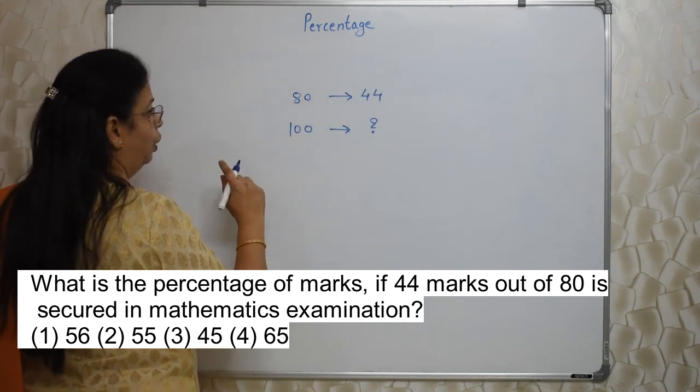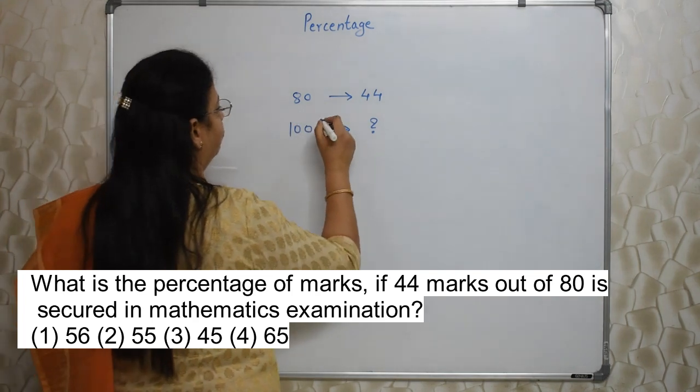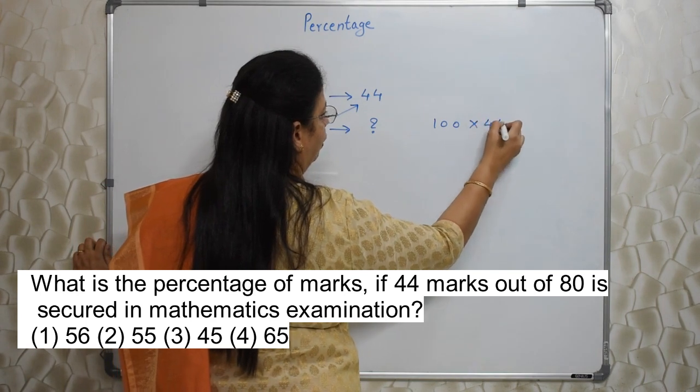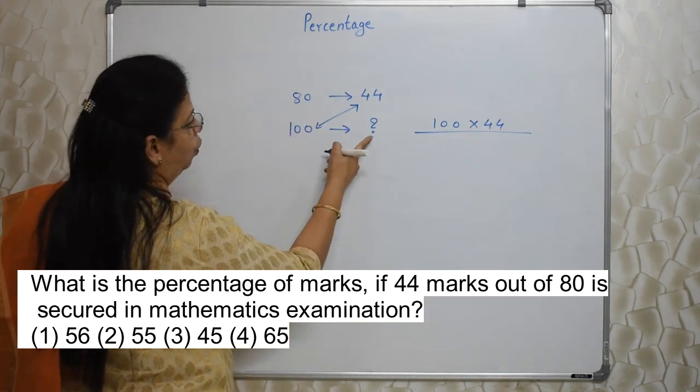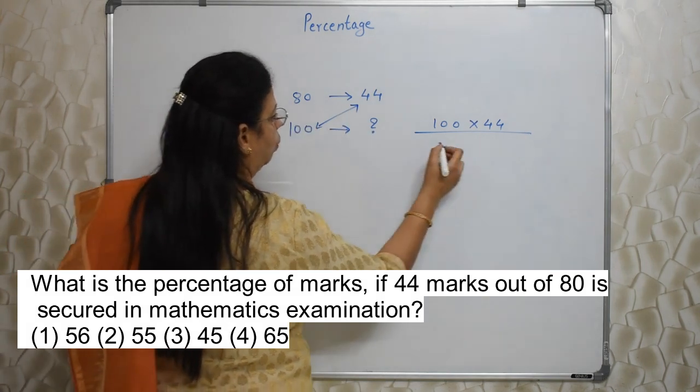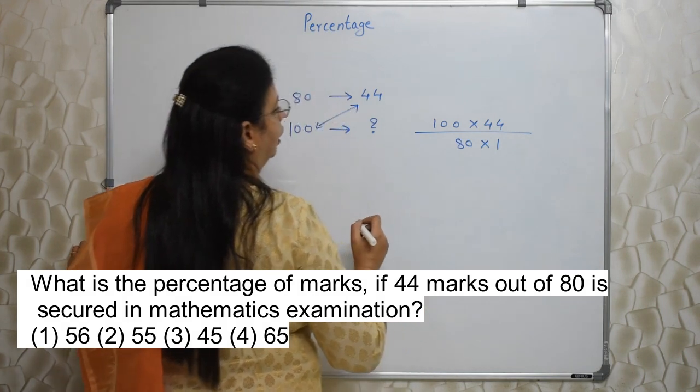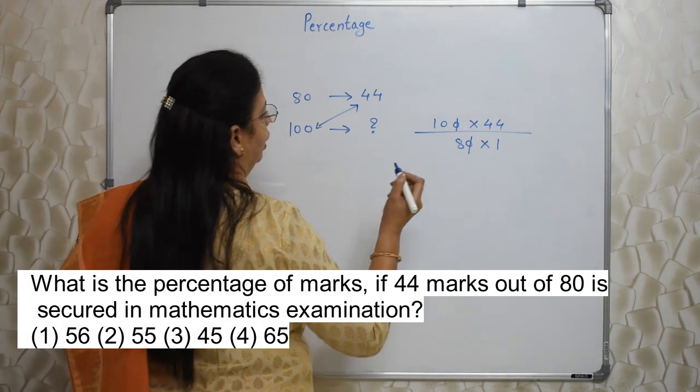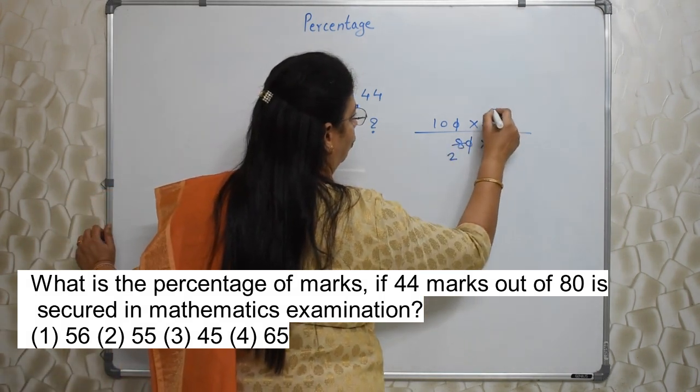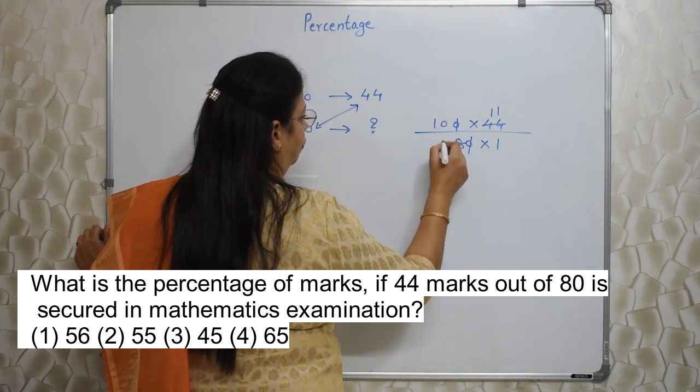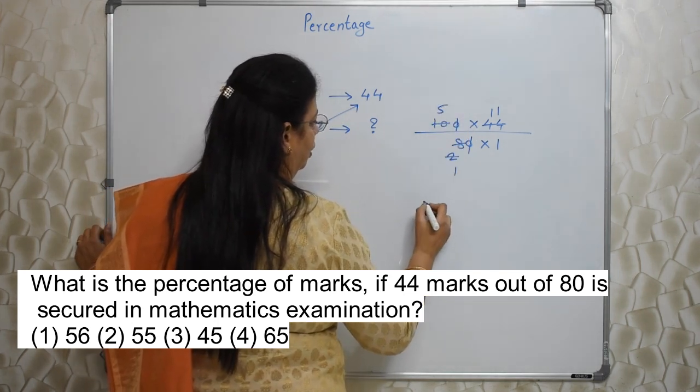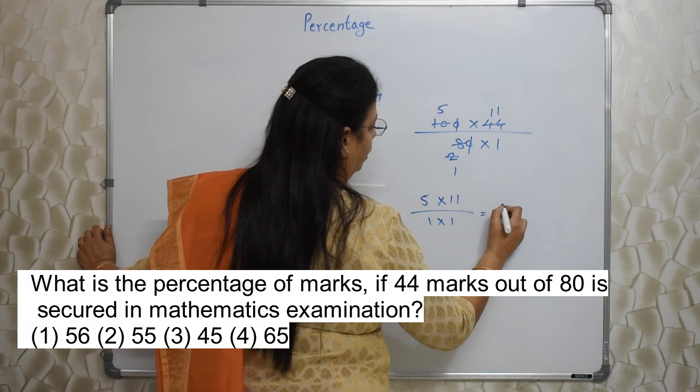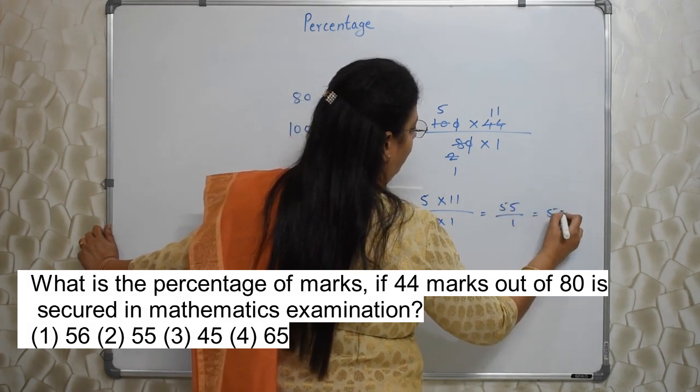Now, as I told you in my earlier videos also, please see that cross multiplication means 100 into 44 will be on top, that is numerator. And 80 into 1, question mark, you can take it as 1, 80 into 1 will be down, denominator. Now, first cancel whichever zeros are possible. And then do it. 4 twos are 8, 4 ones are 4, 4 ones are 4, 2 ones are 2, 2 fives are 10. So what is remaining? 5 into 11 upon 1 into 1, that is 55 upon 1, that is 55%.